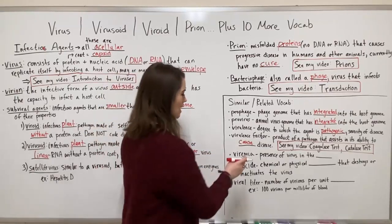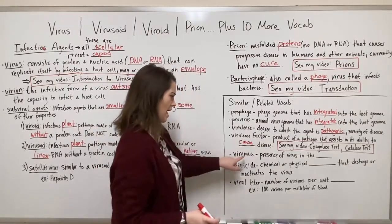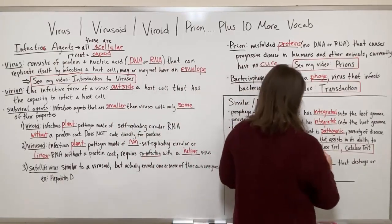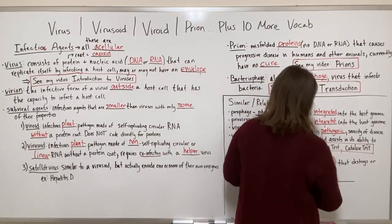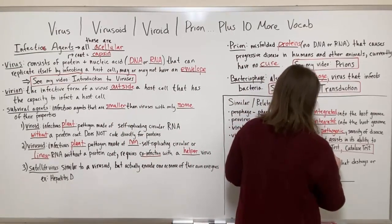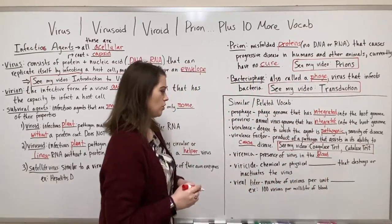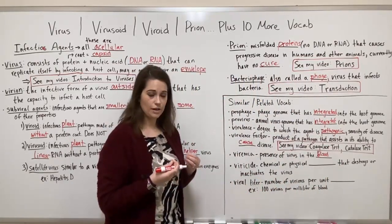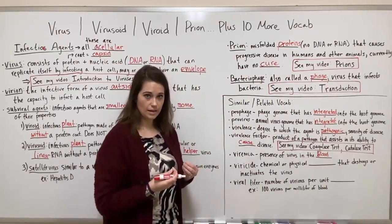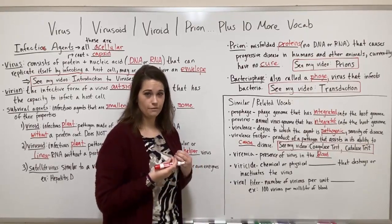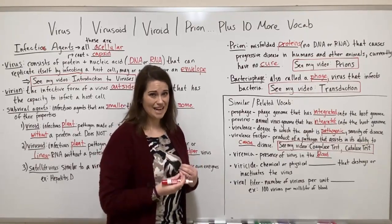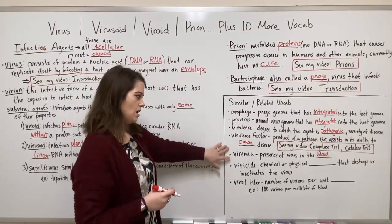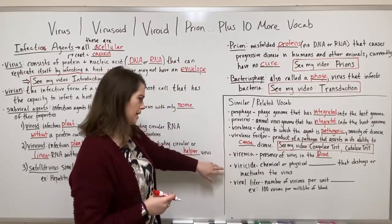Viremia — any time you see the suffix '-emia' at the end of a word, it refers to something in the bloodstream. Viremia specifically means the presence of virus in the bloodstream. If a patient has viremia — a viral infection in their blood — that is a very dangerous situation; you never want large amounts of virus in the blood.